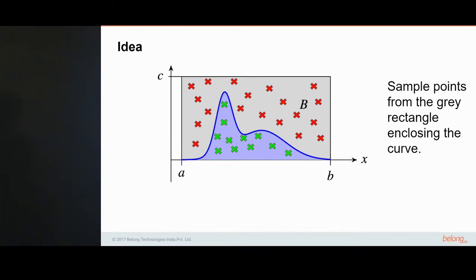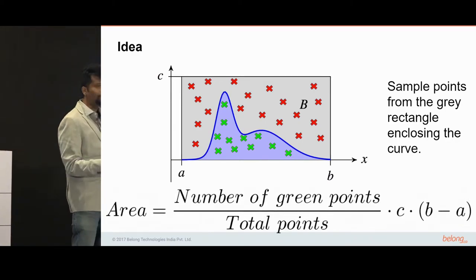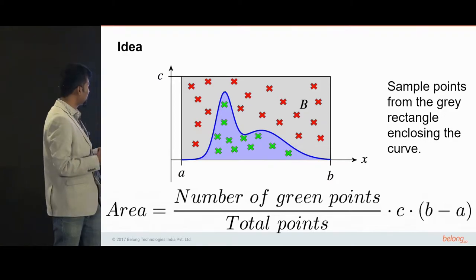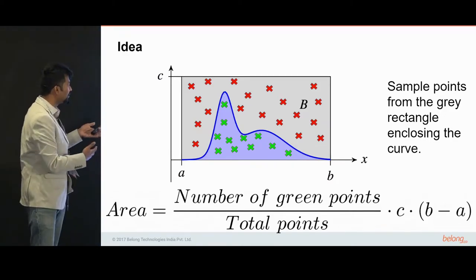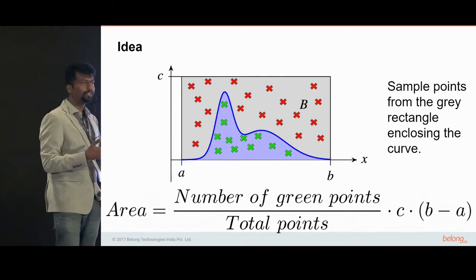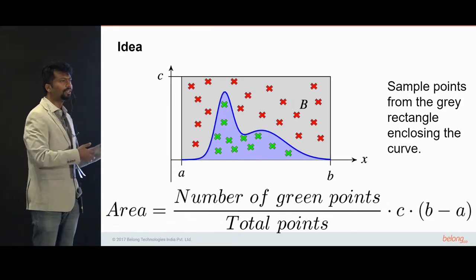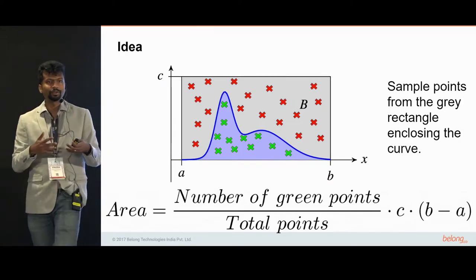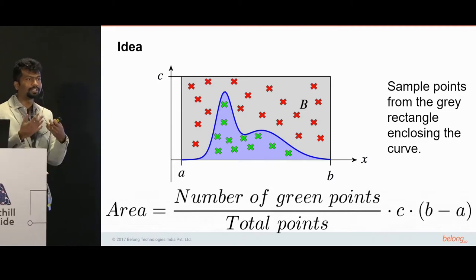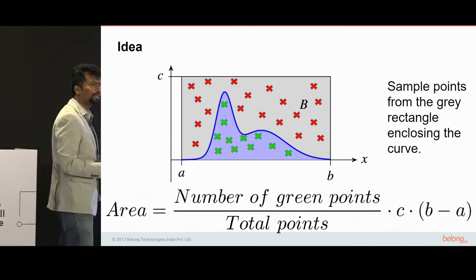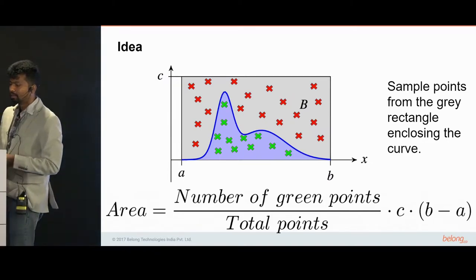Exactly — the ratio. The area is nothing but the number of green points with respect to the total number of points, multiplied by the area of the rectangle, which is c times (b minus a). Essentially, if you sample more points, the results you get are expected to be more accurate. This is an example of how you can use sampling to solve a rather complex-looking problem.